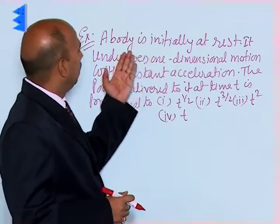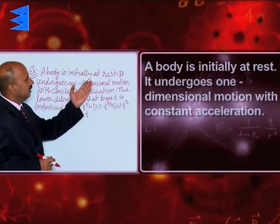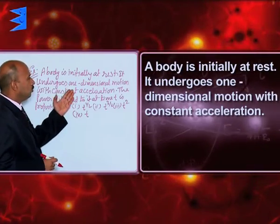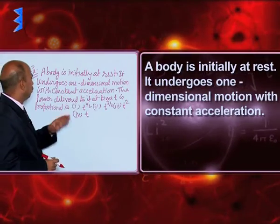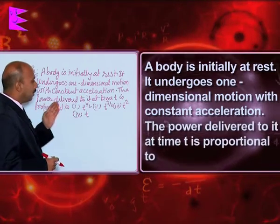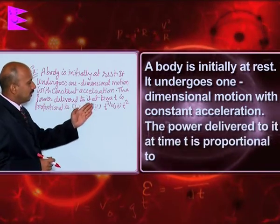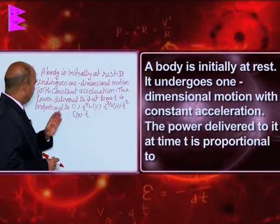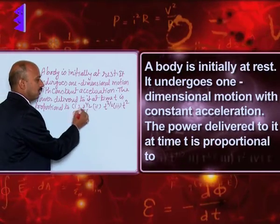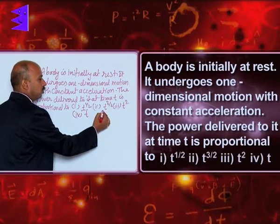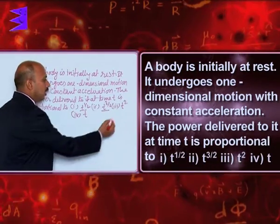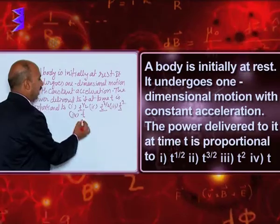See here, a body is initially at rest and undergoes one-dimensional motion with constant acceleration. The power delivered to it at time t is proportional to — four choices are given: t raised to power 1/2, t raised to power 3/2, t squared, and t.